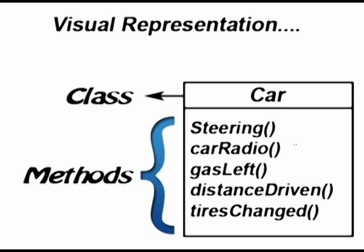Basically, a class has methods, and the methods are what the class does. So this class is like a car class, and the methods of this car are steering, the car radio, how much gas is left, distance driven, and if the tires are changed. Those are common things you might put in a car class in a video game or something. Most of my stuff is theoretical whenever I'm giving graphical representations.